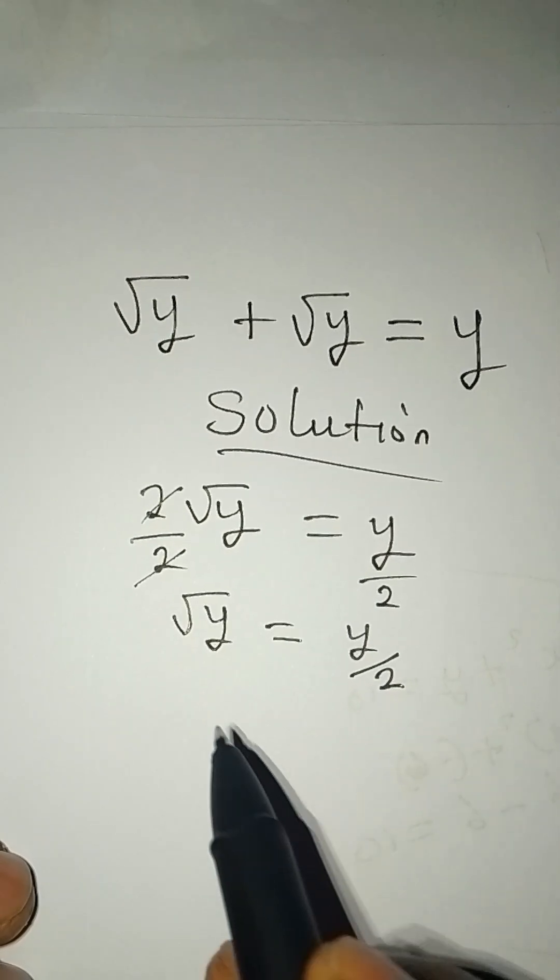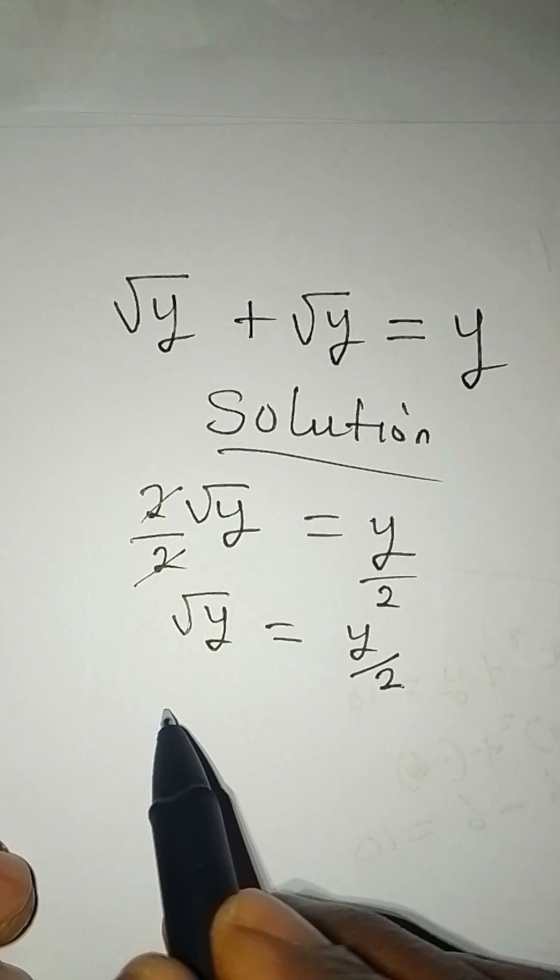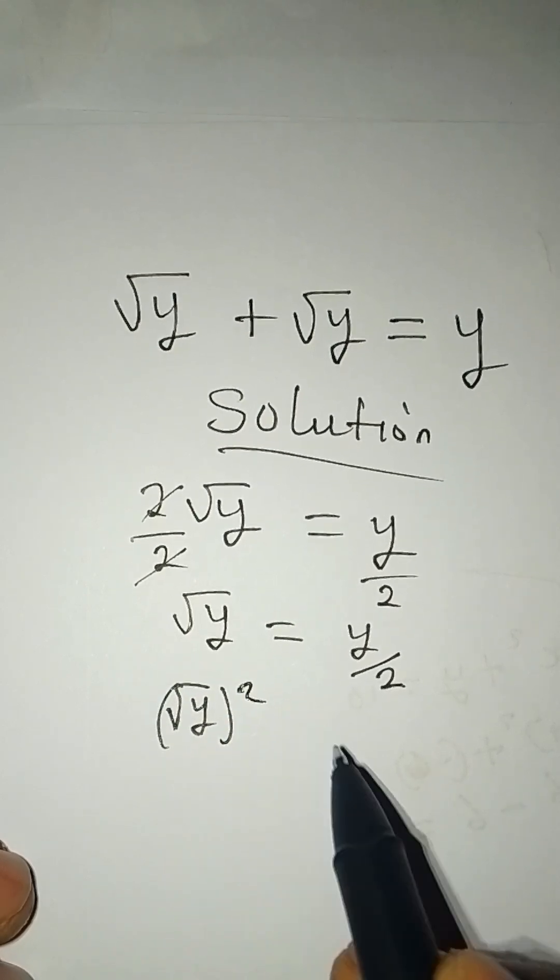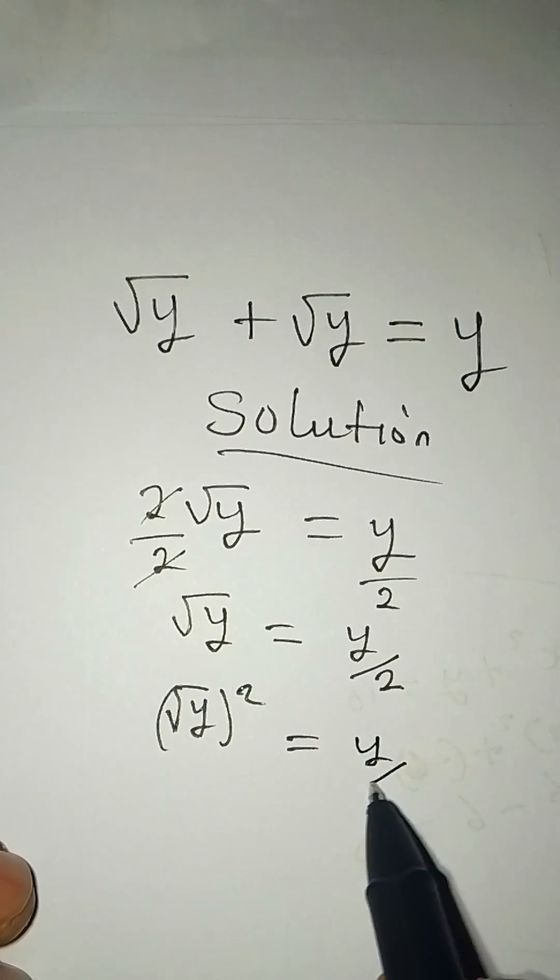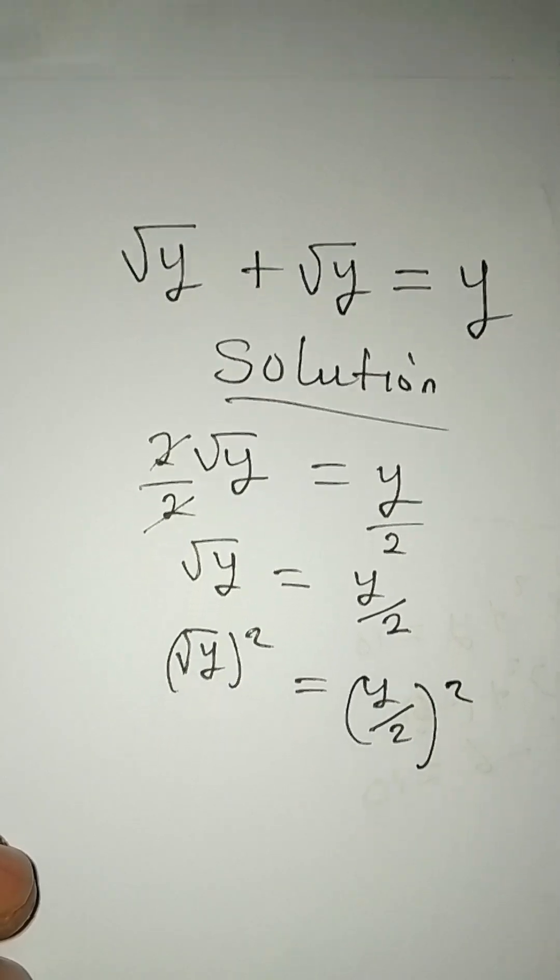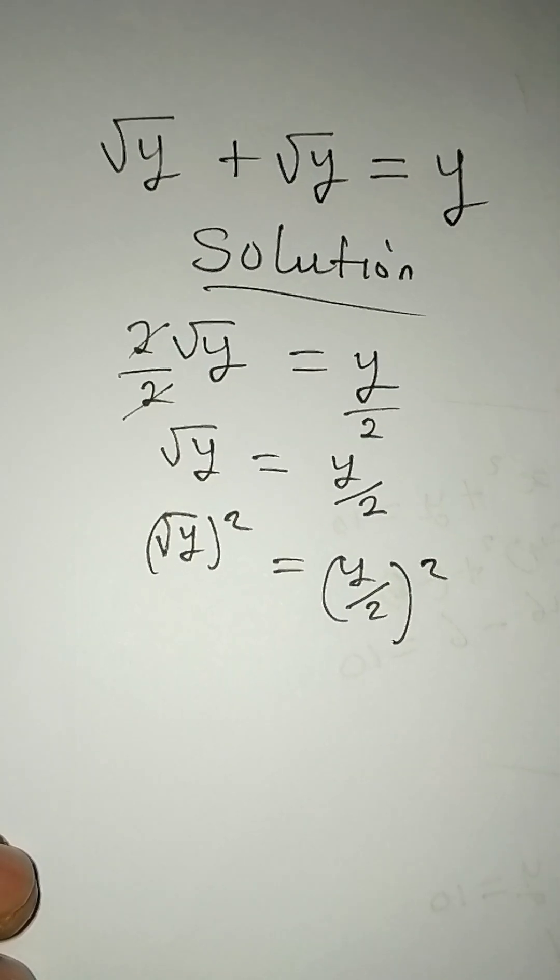At this point, we square both sides, so we have (√y)² = (y/2)². The square root and square cancel.